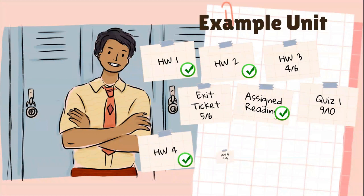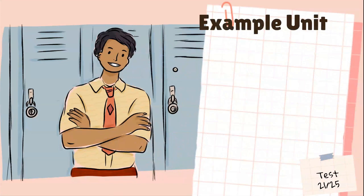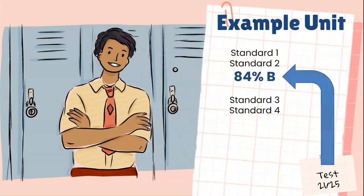A few more homeworks — some collected, some graded. One more quiz and you're still on track. And then it's time for the test: 21 out of 25. That's going to go into your grade for the unit. The teacher decides which standard that grade is aligned to — in this case, standard two. You have an 84 percent, which is the equivalent of a B. Great job.